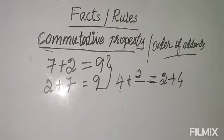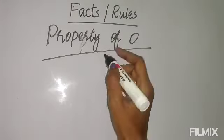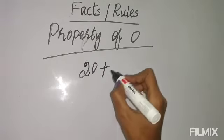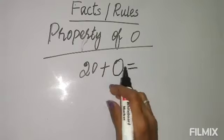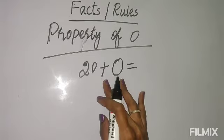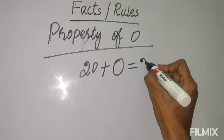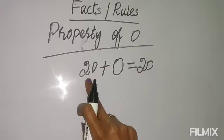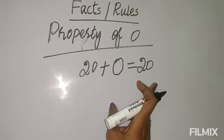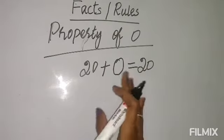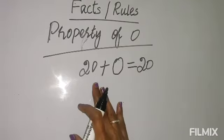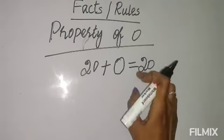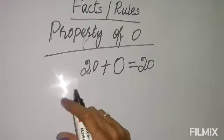The next property is the property of zero. This is very easy. Suppose the number is 20 and the other addend is zero - you don't need to calculate, just write 20 as the answer. If zero is added to any number, the sum is the number itself. The answer won't increase or decrease - when zero is added to any number, the sum is the number itself.